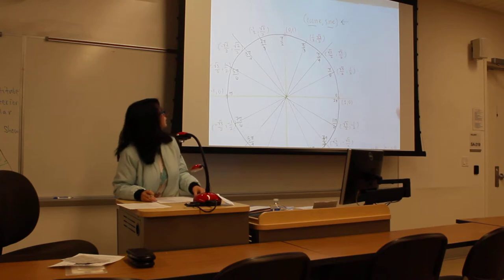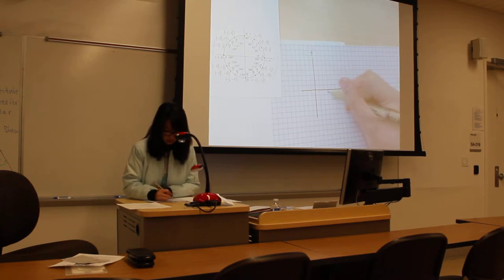Since the unit circle is split up into 0, pi over 2, pi, 3 pi over 2, and 2 pi, we're going to be setting up the x-axis as those. So pi over 2, pi, 3 pi over 2, and 2 pi.